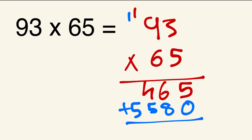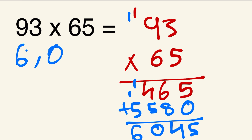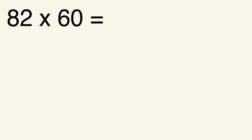Now add: 5 plus 0 is 5, 6 plus 8 is 14 — write 4 carry 1, then 5 plus 4 is 9 plus the carried 1 is 10 — write 0 carry 1, then bring down 6 plus 1 is 6. Wait — working through carefully, the answer for 93 times 65 is 6,045. Next example is 82 times 60 — pause the video and try it on your own first.